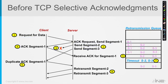In step number three, segment two, which followed just a few milliseconds or microseconds after segment one, gets lost. There's some network congestion — a buffer on some router somewhere got totally full and dropped it.